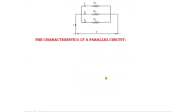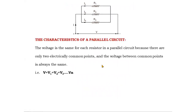Now let's see the characteristics of the parallel circuit. In a parallel circuit, the voltage is same across each and every resistor. For all resistors, there are only two electrical common points, and the voltage between those common points is always the same. That's why the voltage across each and every resistor is the same. From this we can say that the voltage is same in the parallel circuit.